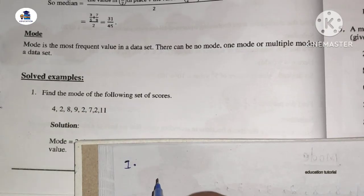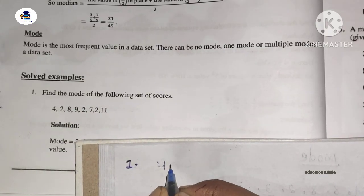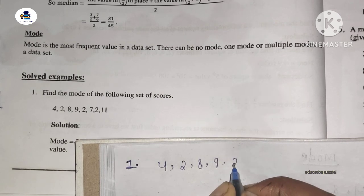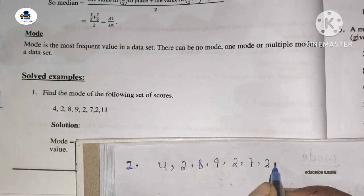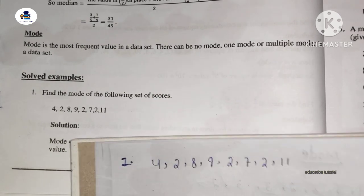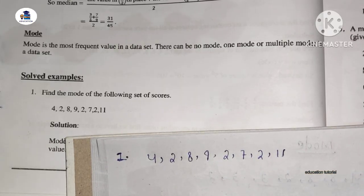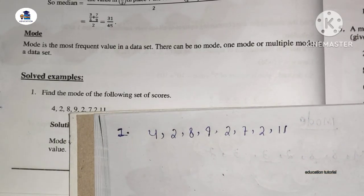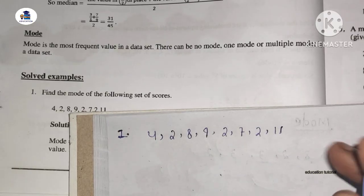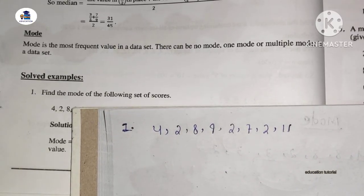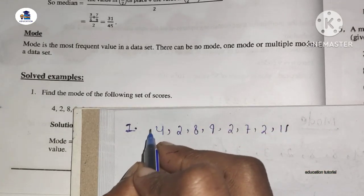The scores are: 3, 4, 2, 8, 9, 2, 7, 2, 11. Find the mode of this dataset.